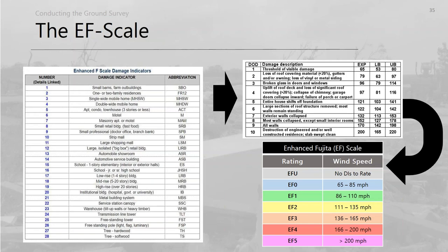The EF scale consists of 28 damage indicators ranging from small barns to skyscrapers to trees, each with degrees of damage from which we assign an EF rating. One thing becoming more common now is assigning the EFU rating when a tornado impacts an object not covered in those 28 items. It used to be that we'd assign EF0 in those cases, but there's a push to use EFU, which has always been available but rarely utilized.